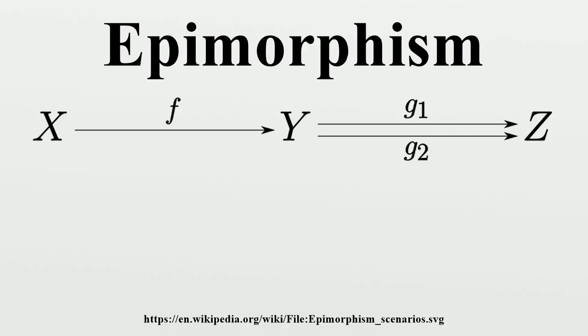Many authors in abstract algebra and universal algebra define an epimorphism simply as an onto or surjective homomorphism. Every epimorphism in this algebraic sense is an epimorphism in the sense of category theory, but the converse is not true in all categories. In this article, the term epimorphism will be used in the sense of category theory given above. For more on this, see the section on terminology below.